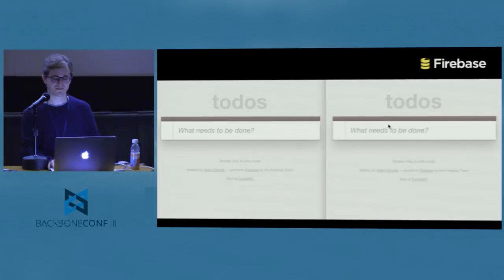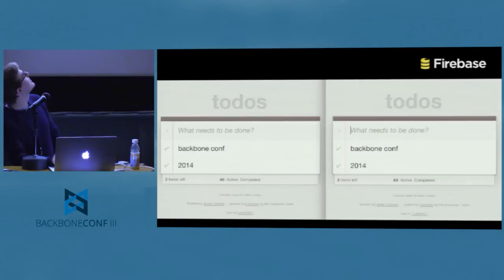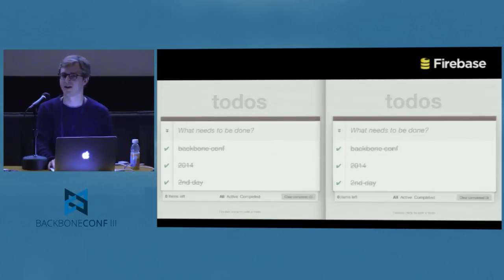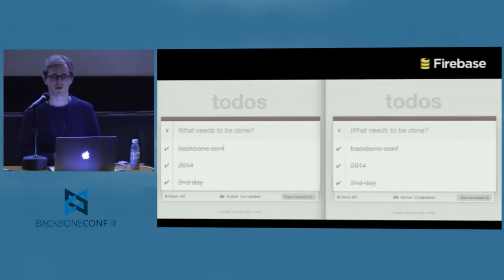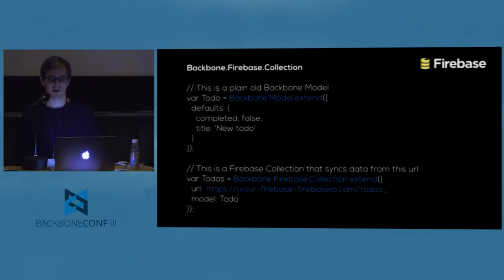The usual demo — the to-do. What I'd like to pinpoint is there is no timer, there is no interval. It's really instant. And how you do this with Backbone — how you migrate from static to real-time — is actually just a one-line change. You just replace your existing collection with a Backbone Firebase collection, providing the URL to your Firebase, and it just goes real-time instantly.